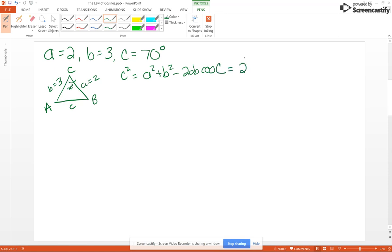Plug in your numbers. So 2² + 3² - 2 × 2 × 3 cos 70°. Now we want c, so c equals the square root of 2² + 3², which is 13, minus 12 cos 70°. Put that into your calculator and you get about 2.98.